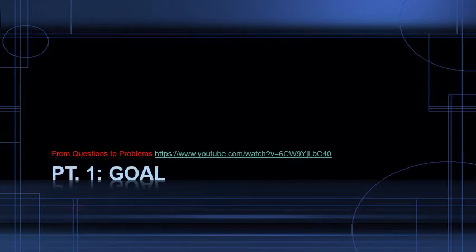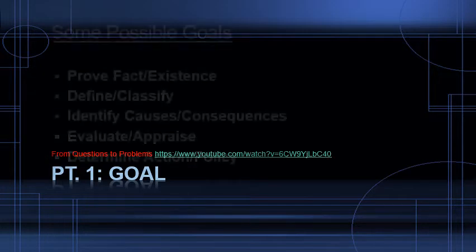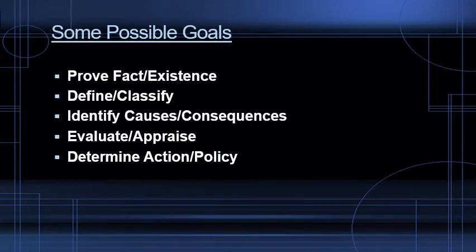Now let's think about what we're going to be doing today. First, I want to go back and go over something from the 'From Questions to Problems' video — that's the goal. What is the object of your paper? What's the specific problem that you want to find out about, and what do you hope to accomplish in your research? There are some basic categories of possible goals that someone can have when conducting a research essay.